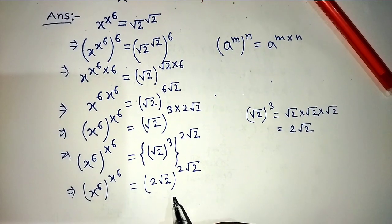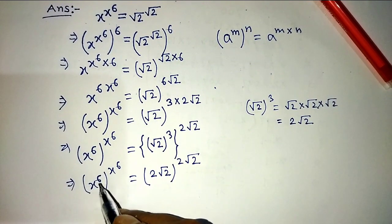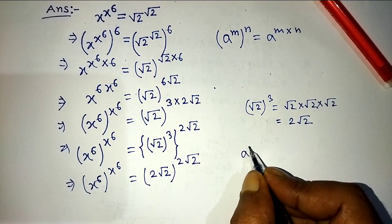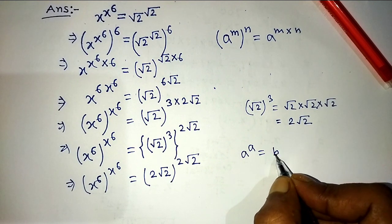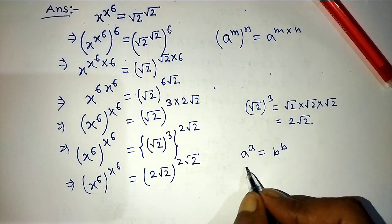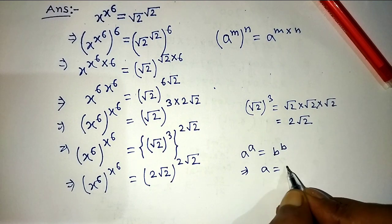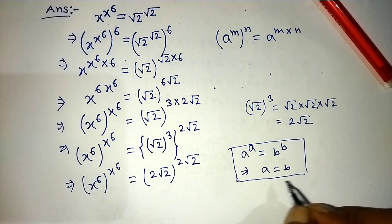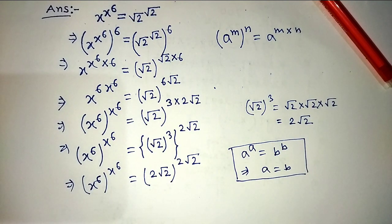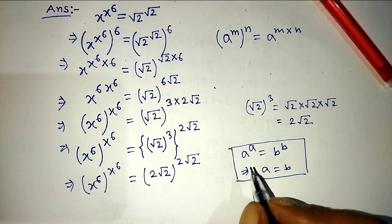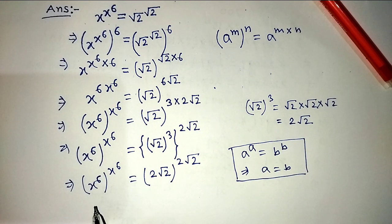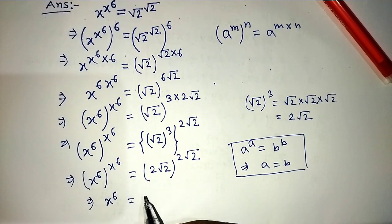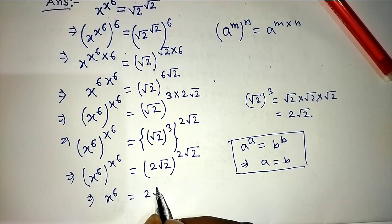To find the value of x from this exponential equation, we apply the formula: if a to the power a equals b to the power b, then a equals b. Applying this formula, on the left hand side x to the power 6 is equal to 2 root 2.